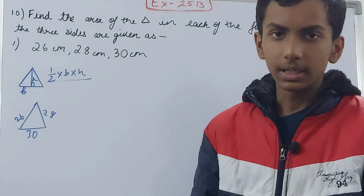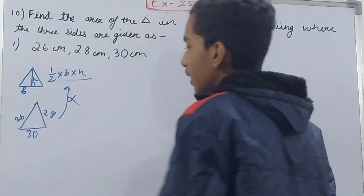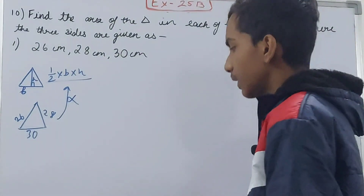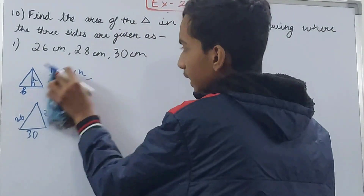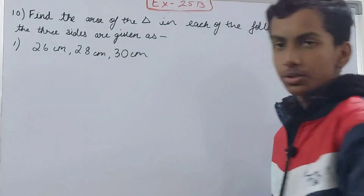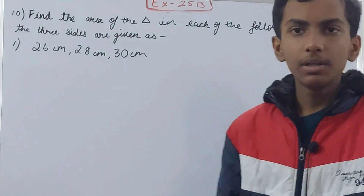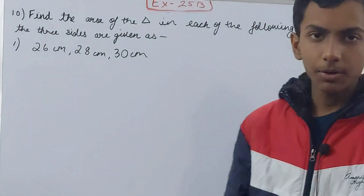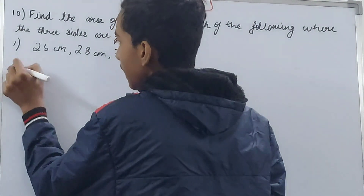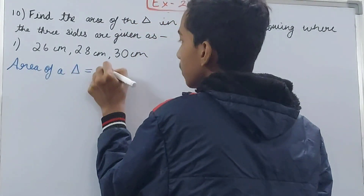So how will you calculate the area? That is the question. In that case, you cannot use the ½ × base × height formula because you don't know the height, and there is no way of calculating it. To solve this problem, we will not use the half base into height formula, but instead we will use a formula given by Heron — called Heron's formula. It says: area of a triangle is equal to the square root of...